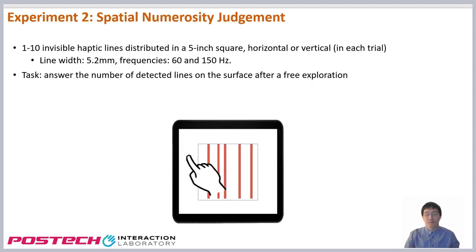The second experiment investigated numerosity judgments. In each trial, 1 to 10 invisible horizontal or vertical haptic lines were presented on the surface, and the users were asked to count them and answer.